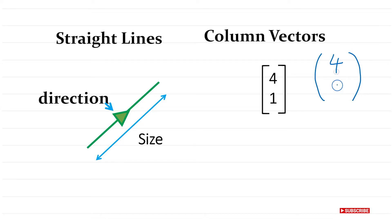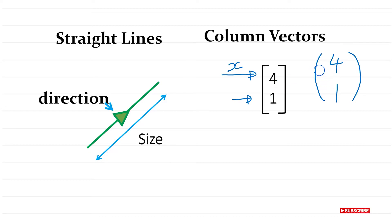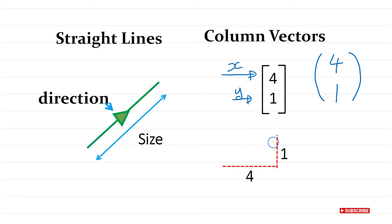A column vector looks like this — for example (4, 1). The top number represents movement in the x-direction, that is left or right, and the bottom number represents movement in the y-direction, that is vertical movement up or down. So if I write (4, 1) it means I'm going four steps to the right and one step up. The top number must always represent the horizontal movement.